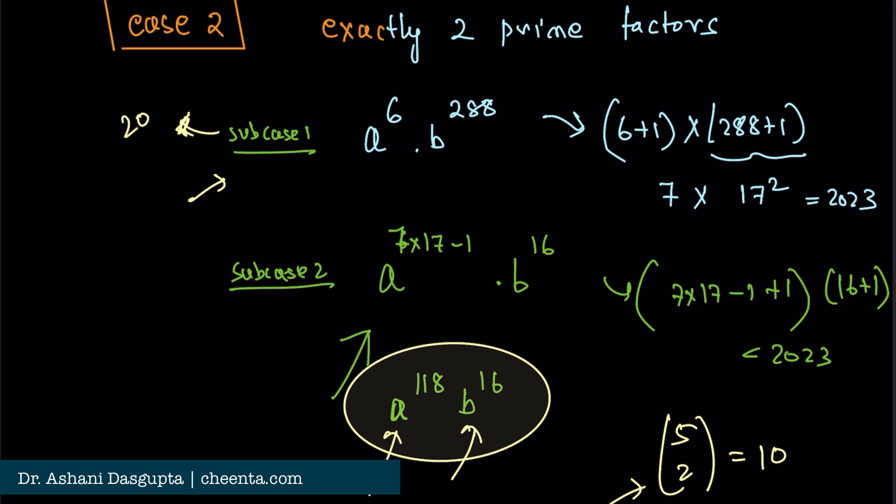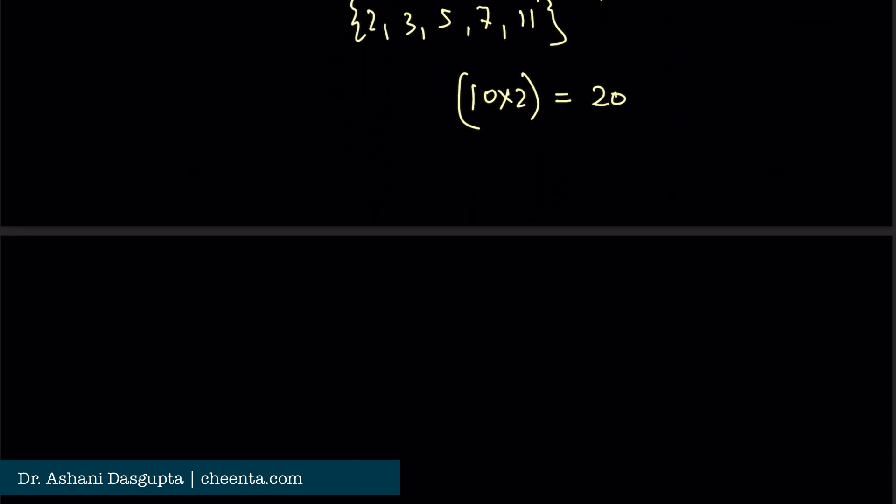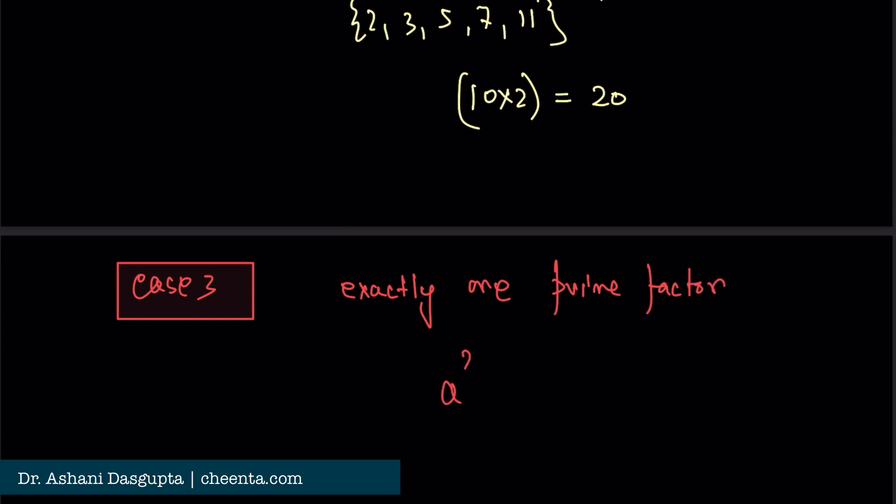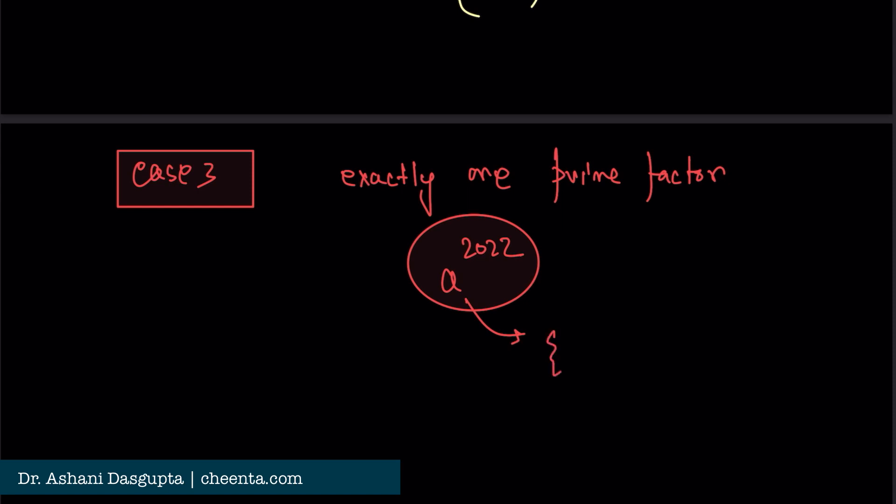Case 3 is exactly one prime factor, which is simply a^2022. The number a can be chosen from the set {2, 3, 5, 7, 11}. So there are five cases here, or five such numbers.